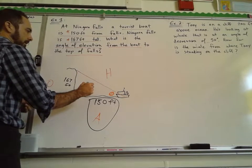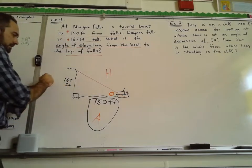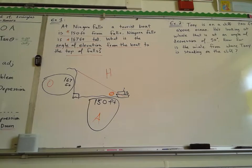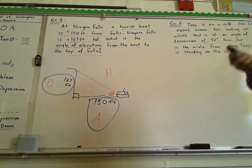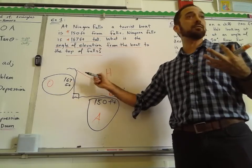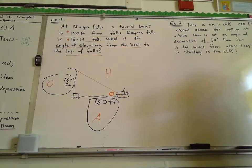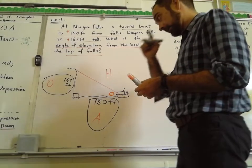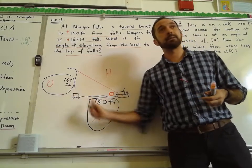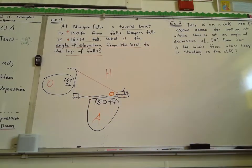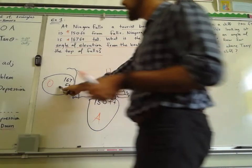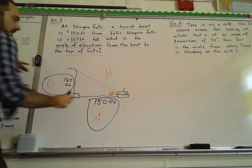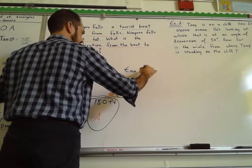There's no information about the hypotenuse. If you're looking for the angle, it uses two sides that have information about them. You could find hypotenuse using A² + B² = C², but that's another route. I know that the opposite and the adjacent are in play — those are the two sides in play. What does SOH-CAH-TOA tell me about opposite and adjacent? Tangent. TOA. Tangent of theta equals the opposite over the adjacent.